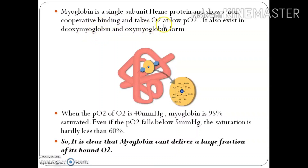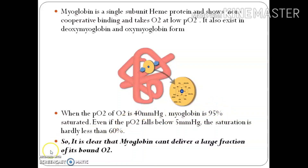Unlike hemoglobin, myoglobin is a single-subunit protein and shows non-cooperative binding. It takes oxygen at a relatively low partial pressure and exists in deoxymyoglobin and oxymyoglobin forms. As you can see in the structure, myoglobin has a single subunit with heme in the center. At 40 mmHg, hemoglobin is 75% saturated while myoglobin is 95% saturated. Even if pO2 falls below 5 mmHg, myoglobin saturation is barely less than 60%, so myoglobin cannot donate oxygen to a great extent — it is not an ideal oxygen carrier.